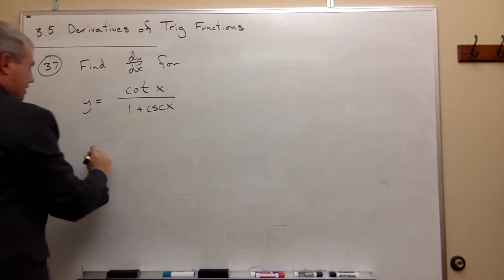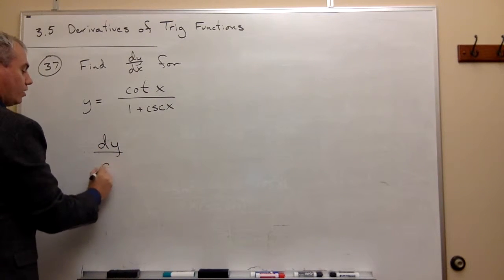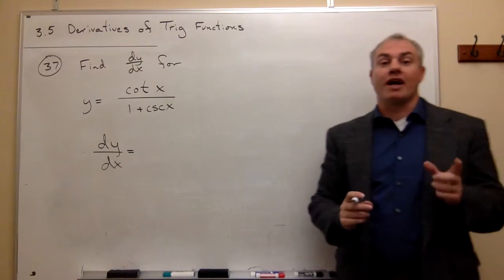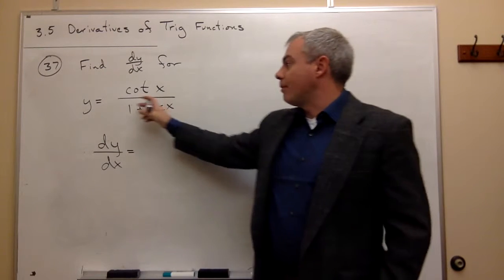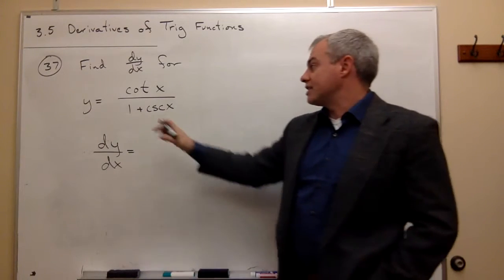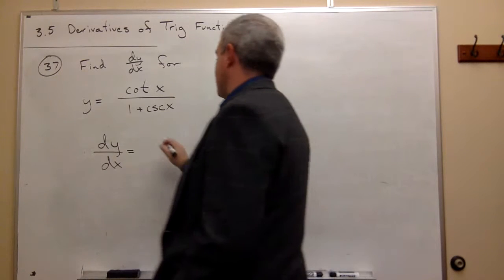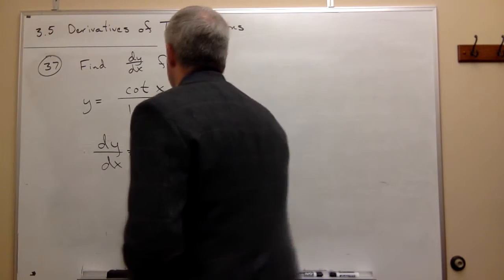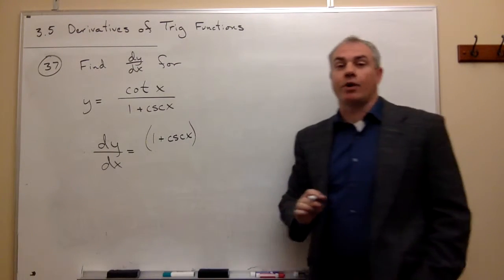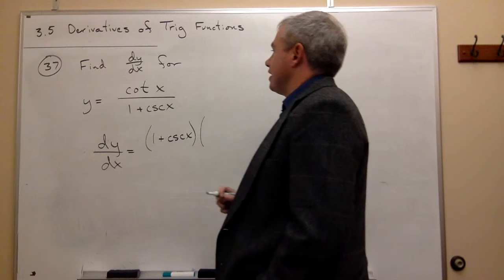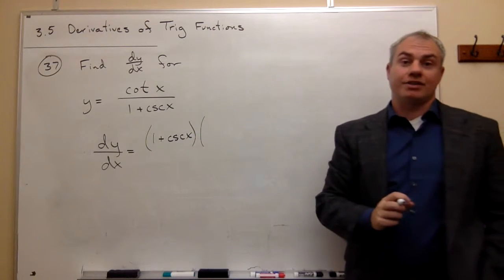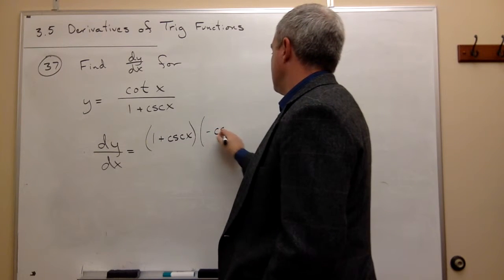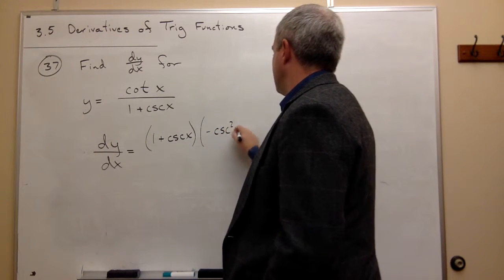So if I take the derivative of this function, dy over dx, whenever I use the quotient rule, the first thing that I want to write down on the board is whatever it is that's on the bottom. In this case, what's on the bottom is 1 plus cosecant of x. So I write 1 plus cosecant of x, so the bottom, times the derivative of what's on top. We have to remember what is the derivative of cotangent of x, and the derivative of cotangent of x is negative cosecant squared of x.